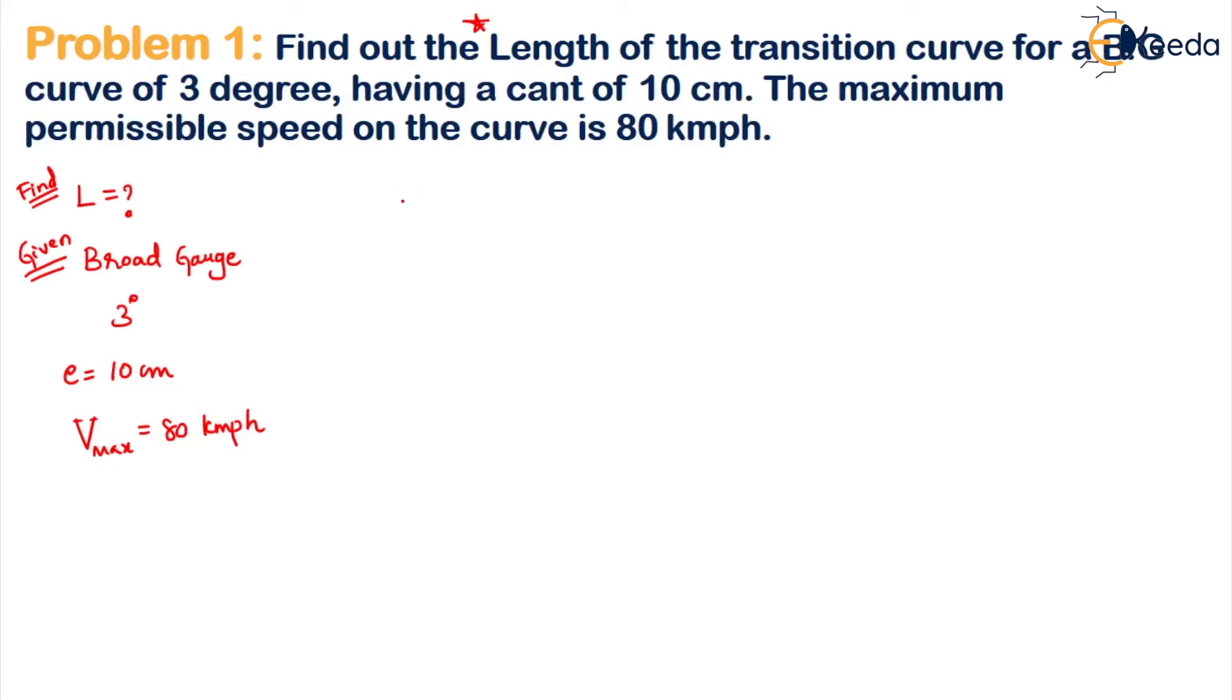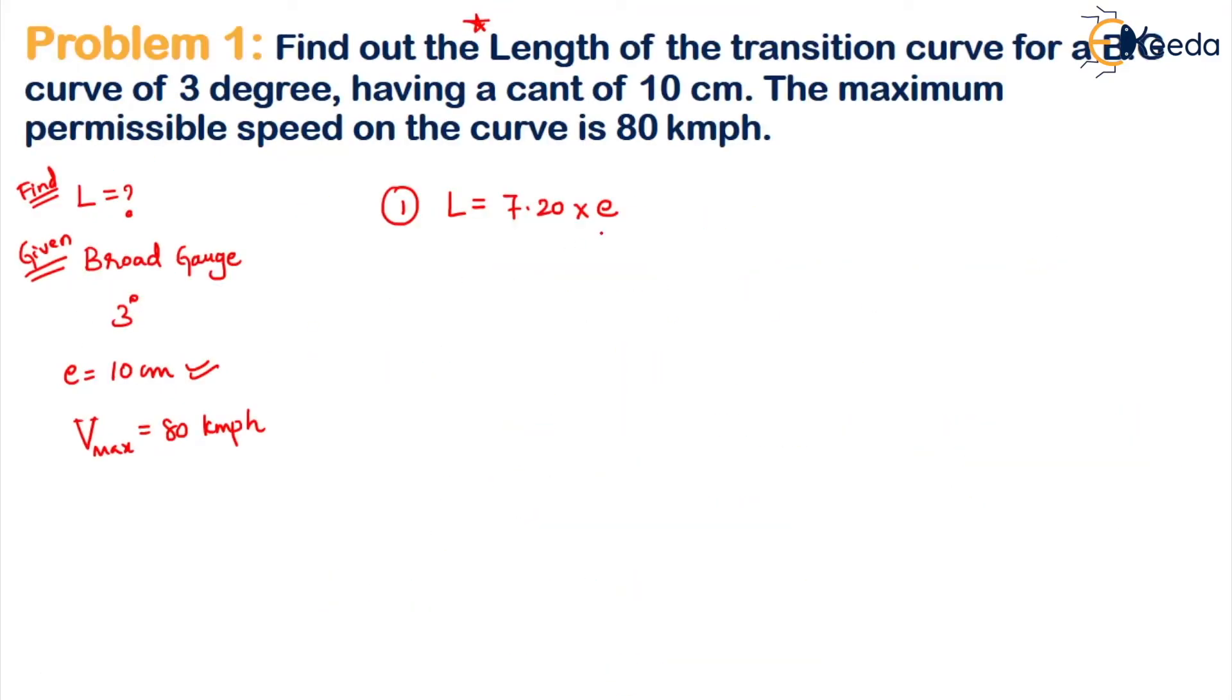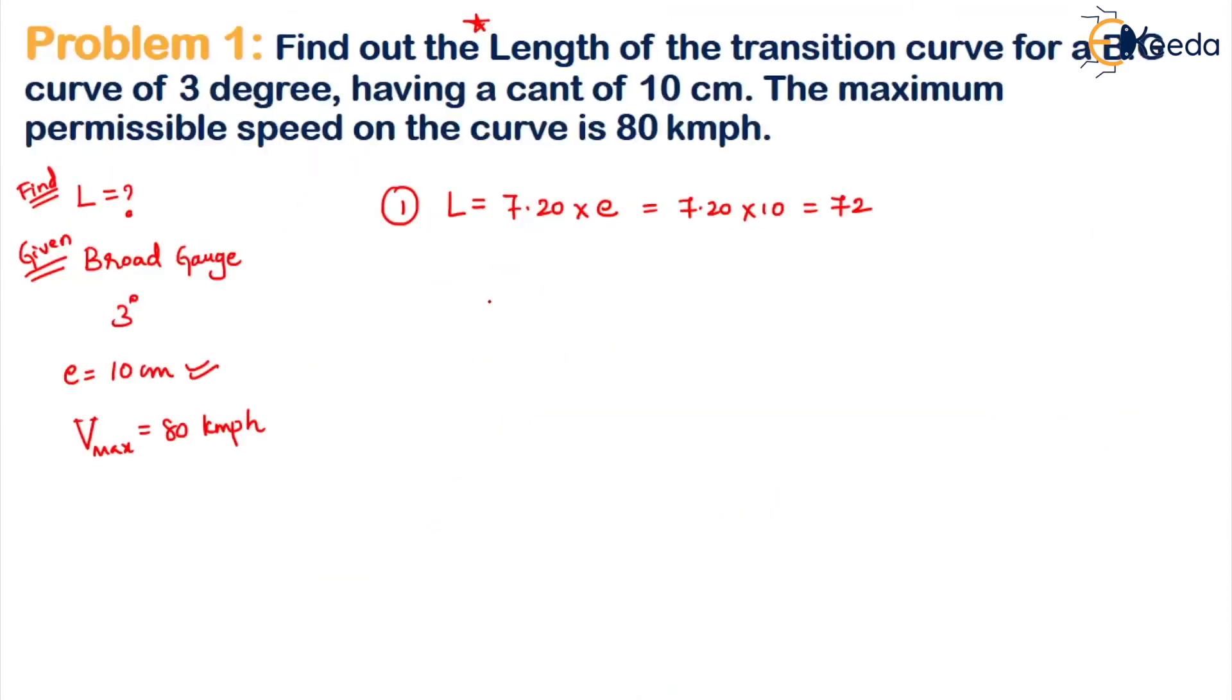So the first formula gives L = 7.20 × 10 = 72 meters. Please remember, this result is in meters.